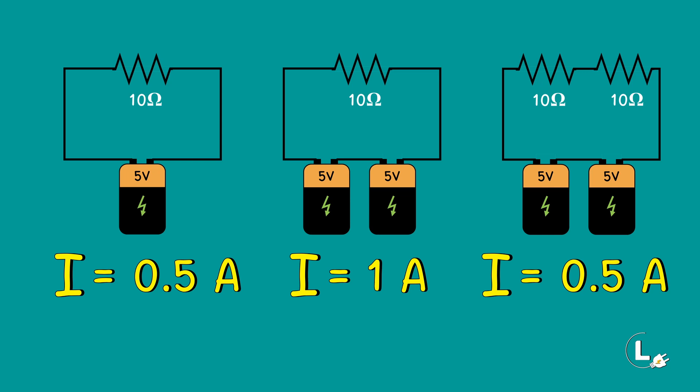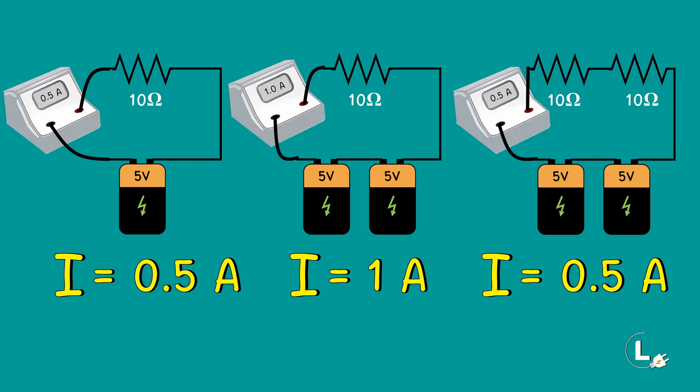We can also use an ammeter to find the current flowing through the circuit. The ammeter is connected in series with the circuit to measure the amount of current passing through it. The ammeter will show the same value as the current value that we calculated through Ohm's Law.